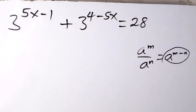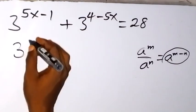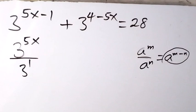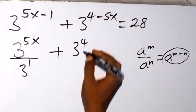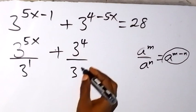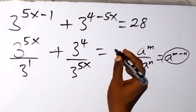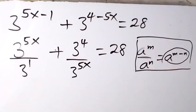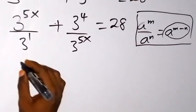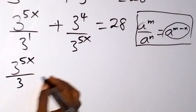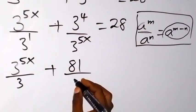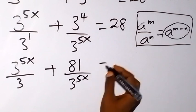That means what we have here can be written as 3 raised to the power 5x divided by 3 raised to the power 1, plus 3 raised to the power 4 divided by 3 raised to the power 5x, which equals 28. We can simplify further: this gives us 3 raised to the power 5x divided by 3, plus 81 over 3 raised to the power 5x, equal to 28.